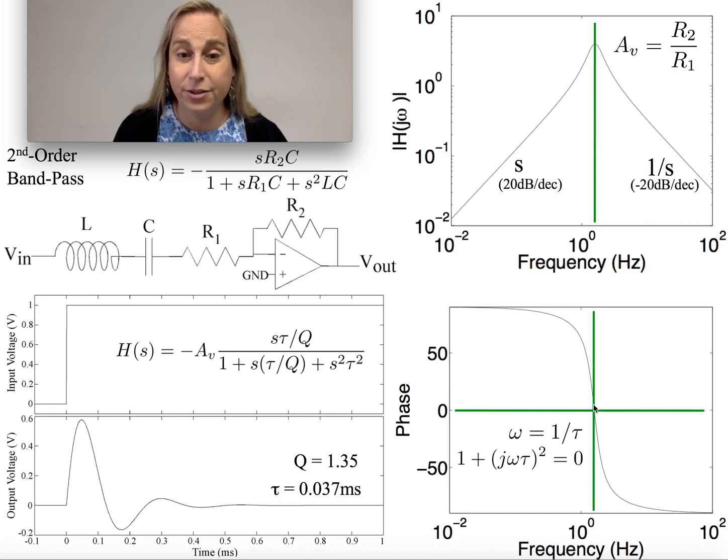An interesting thing to notice in a bandpass, probably more important than other regions because the signal I care about is right in the middle, is that omega equals 1 over tau right at the corner, at its center point. In this structure, S would be j omega. If I put j omega in,